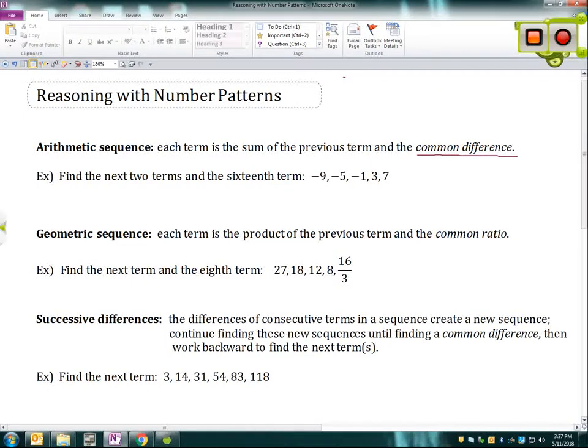So for this first example, we have negative nine, then negative five, then negative one, then three and seven. And this is arithmetic, we can see that we have added four, and then added four, and then again added four, again added four. If we want to find the next two terms, then we continue that process. We add four to get eleven, and then add four one more time to get fifteen. So these are our next two numbers.